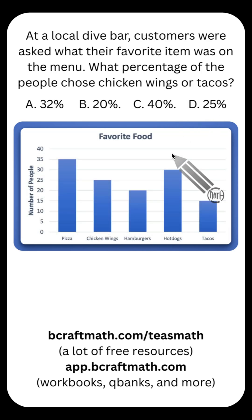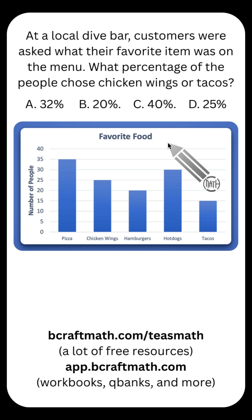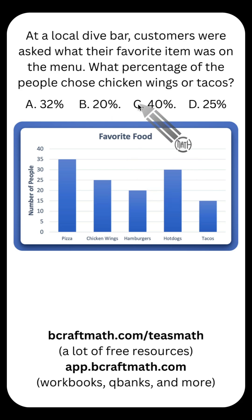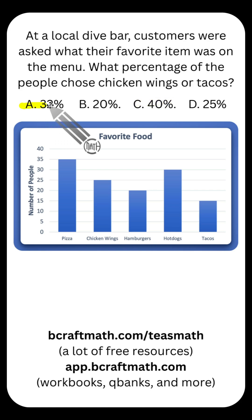Now in this example, we are not dealing with money. Assuming you've read the question and you've looked at the bar graph, you may be thinking the answer is C. And if you did think that, that's the sneaky part. The answer is actually A, and I'm going to show you how to get that.